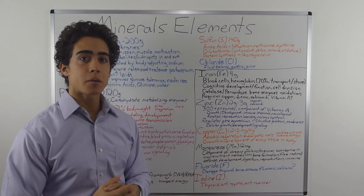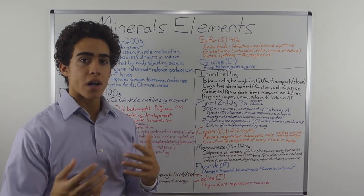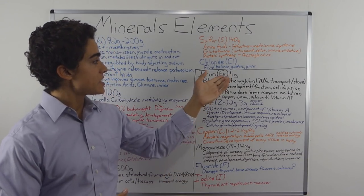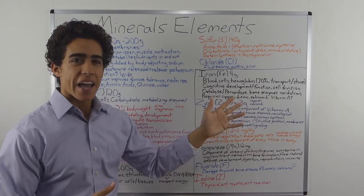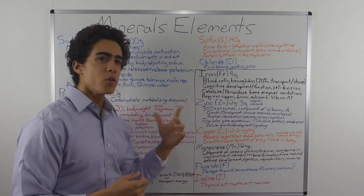Chloride is mainly obtained by consuming salt. Salt is simply sodium bound to a chloride molecule with a bunch of other trace minerals and elements. It is involved in fluid balance and chloride is one of the main components of gastric juice.